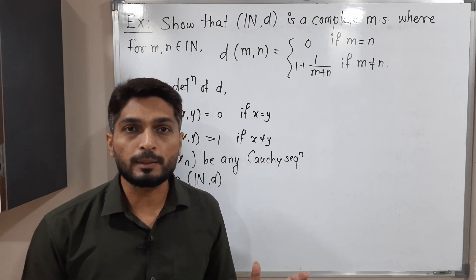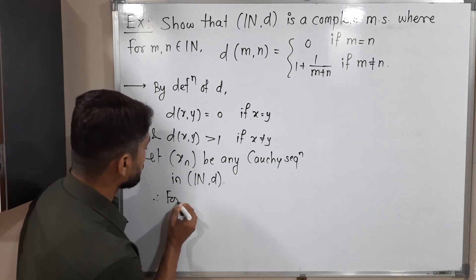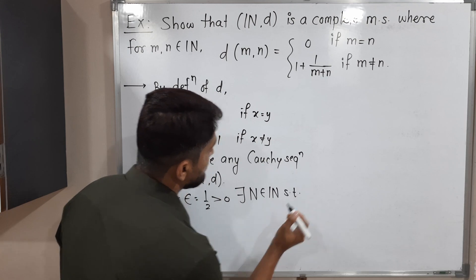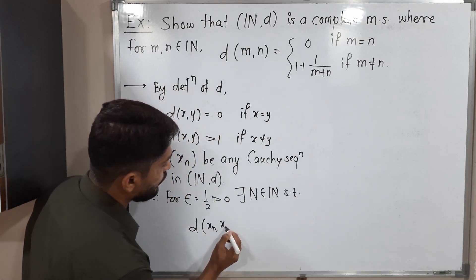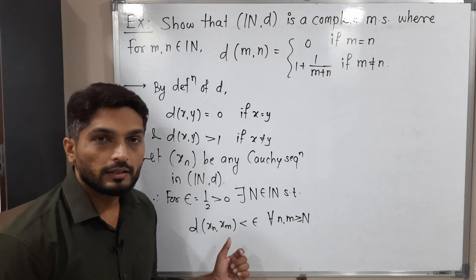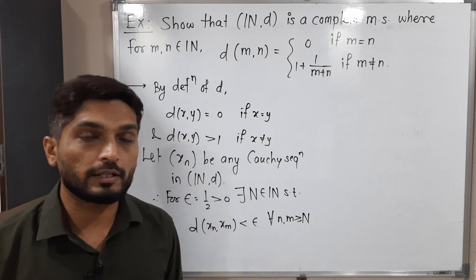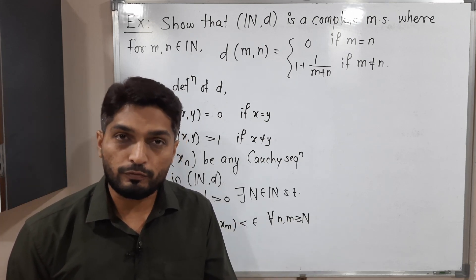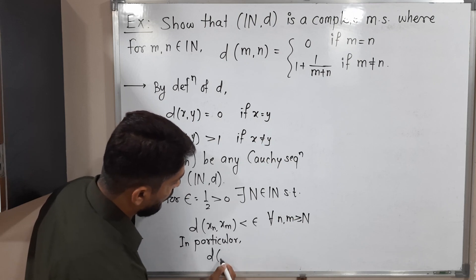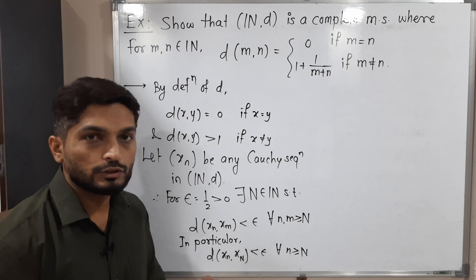We can take any epsilon which is positive. Here I am taking epsilon = 1/2. Therefore, for ε = 1/2 > 0, by definition of Cauchy sequence, there exists a natural number N such that D(X_n, X_m) < ε for all n, m ≥ N. In particular, fixing m = N, we get D(X_n, X_N) < ε for all n ≥ N.